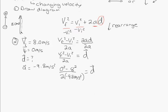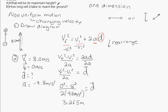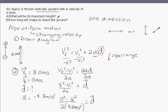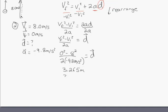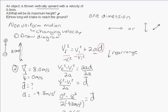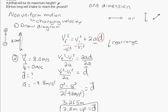Typing that into the calculator gives 3.265. Since 8 meters per second has two significant digits, I round to two significant figures: 3.3 meters. The displacement is 3.3 meters upward. That's the answer for part one — the maximum height is 3.3 meters up.